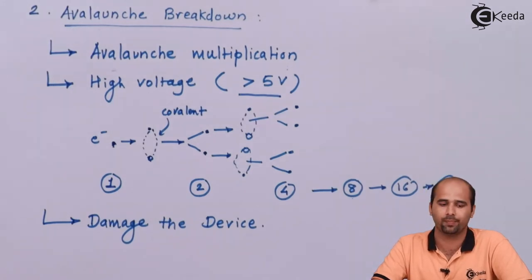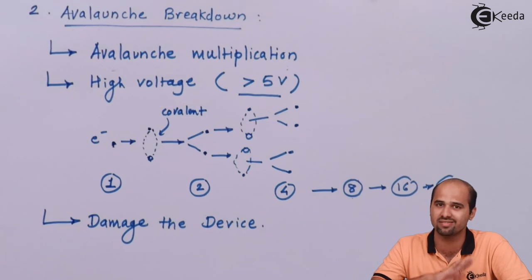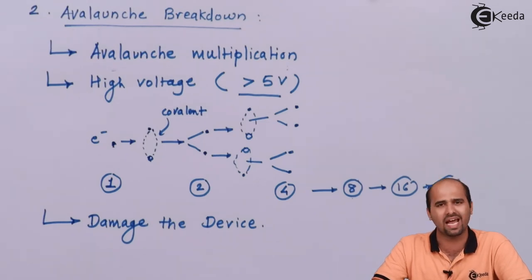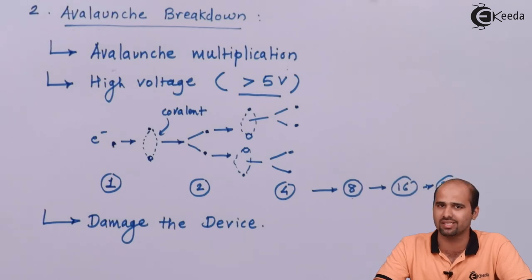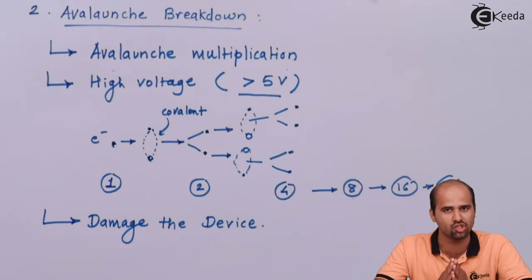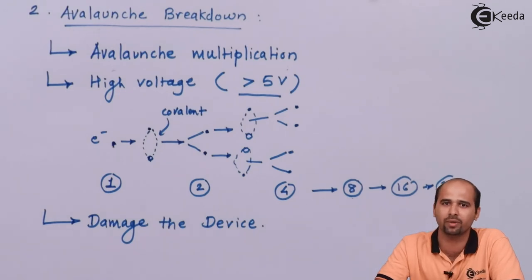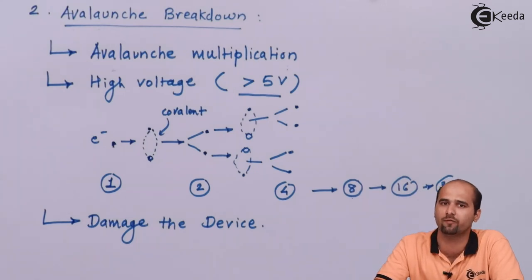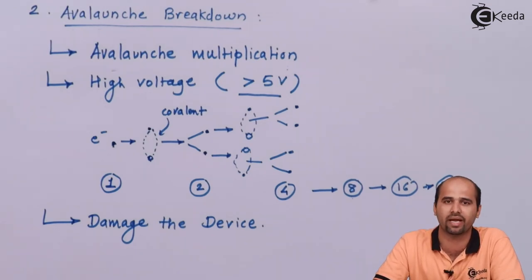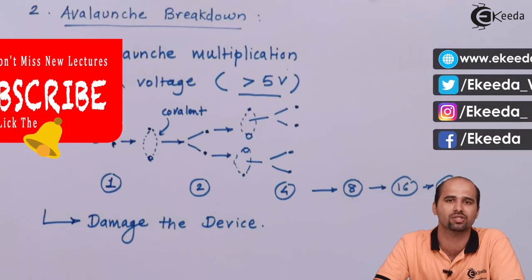We will stop here by understanding the process of zener breakdown and avalanche breakdown. By understanding zener breakdown, there will be one question: can we reform a particular device in the form of a diode which will carry that particular amount of current while keeping the voltage constant, so that I can form a diode with constant voltage? The answer is yes. In the next video we will learn that particular special diode which will keep the voltage constant but limit the amount of current flowing in the opposite direction. Learn more EDC along with Ekeda videos — thank you so much.